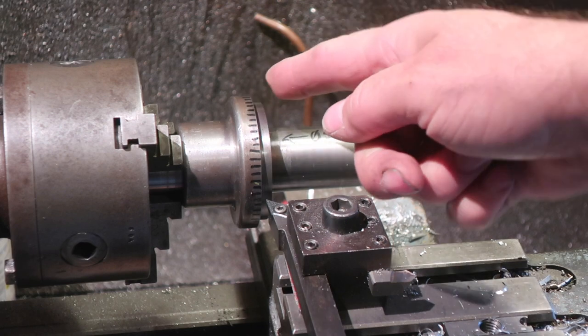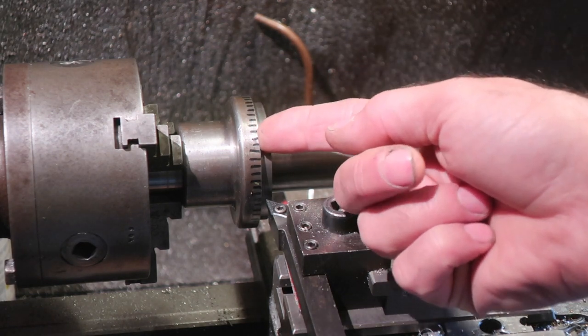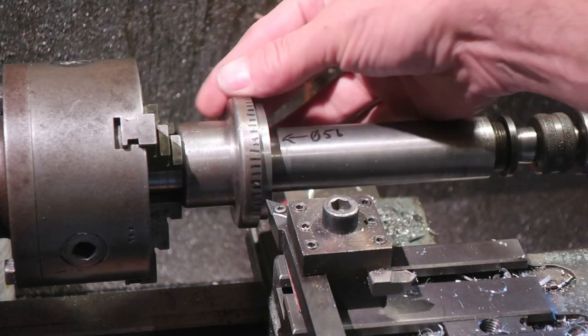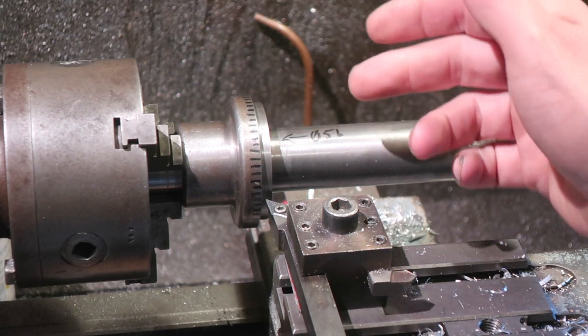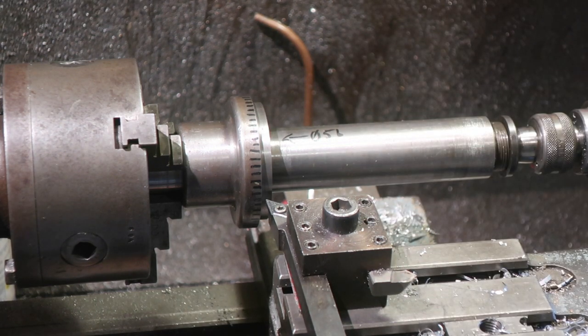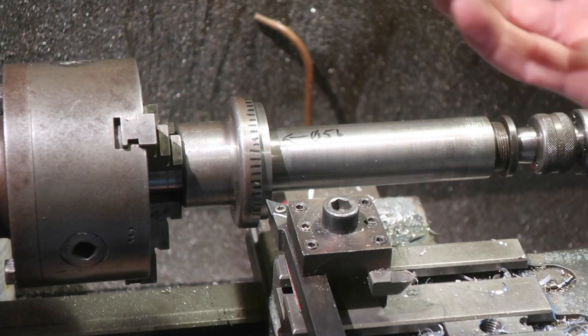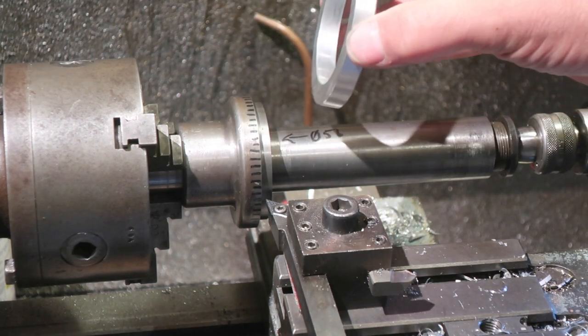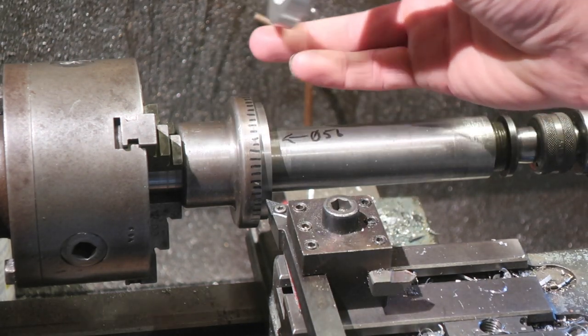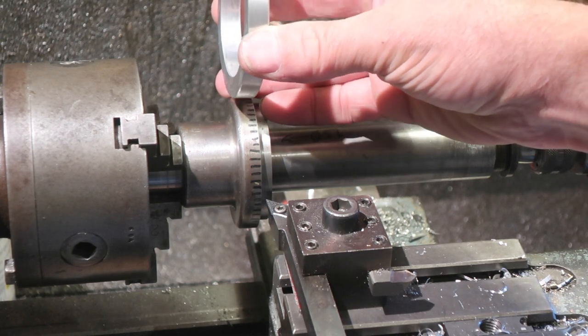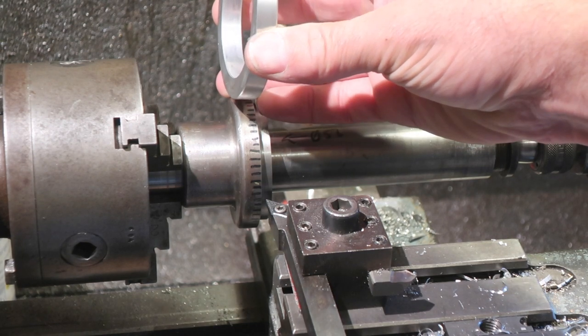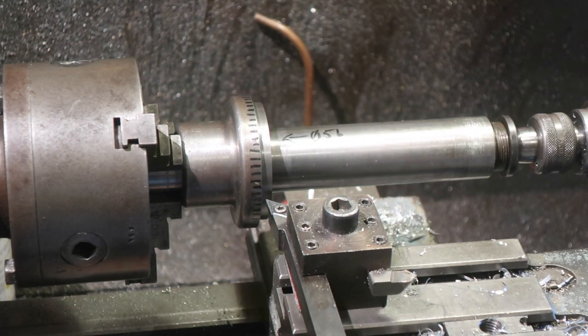This is the spindle nose. This bit keeps the bearings completely clear of chips and stuff. There will be an aluminum ring that goes around here which is bolted onto the front of the housing, and that will keep the crap out. That's where the spindle lock is going to be mounted.